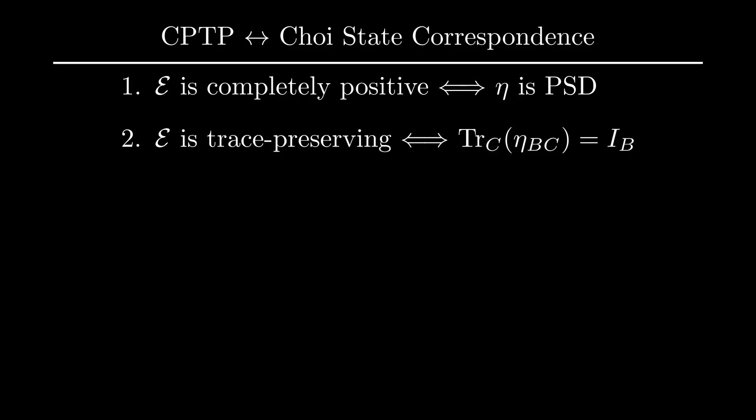Furthermore, there is also a nice correspondence between the properties of the Choi state and the properties of CPTP maps. In particular, we have that a map is completely positive if and only if the Choi state is PSD, giving us a nice way of testing this property. Furthermore, we have that a given map is trace-preserving if and only if the partial trace of the corresponding Choi state over the system over which the channel acts on gives the identity matrix.